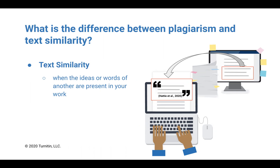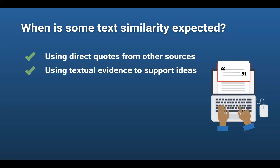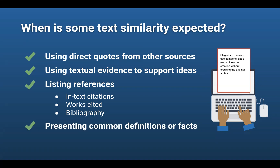Text similarity can be entirely expected and appropriate, based on the expectations or requirements of your assignment. Instructors expect to see some text similarity in your writing when you are using direct quotes or textual evidence from other sources to support your ideas. Perhaps surprisingly, listing references such as in-text citations or bibliographic information can be flagged as text similarity when using a similarity checking tool. So can the use of common facts or definitions, which typically don't need to be cited.